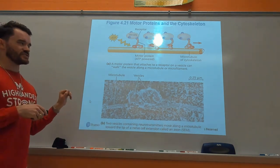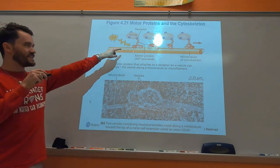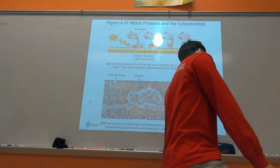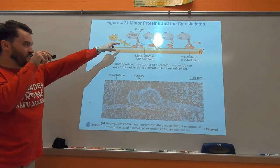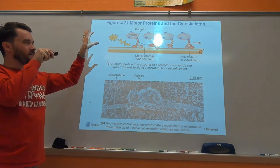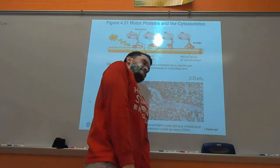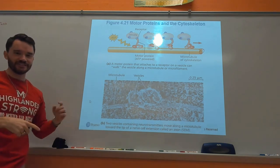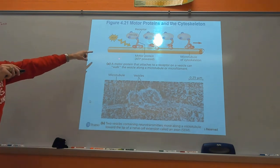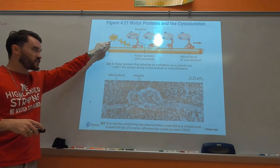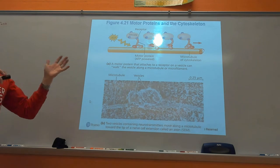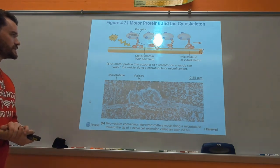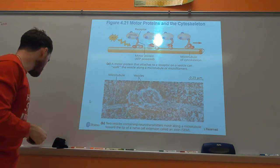Motor proteins are really cool - you can find animations of them on YouTube. They literally have legs and walk around. On their head, there's a receptor that connects to a vesicle - it'd be like me putting a basket on my head and walking around, connected to a fiber running throughout the room. These things move super fast, powered by ATP made in the mitochondria through cellular respiration. That's what I mean when I say the cytoskeleton is like a highway system - it transports different vesicles or organelles throughout the cell.